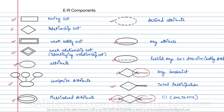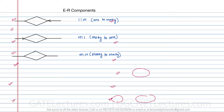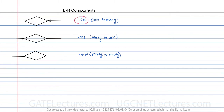Here is an example. The next components are for representing a many-to-many relationship. For a one-to-many relationship, you can see the cardinality ratio representation — this side is the many side and this side is the one side. For many-to-one, this is the many side and this is the one side. When represented on both sides, the relation is many-to-many.